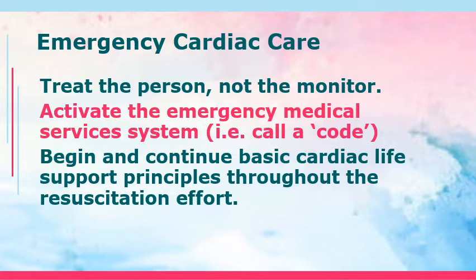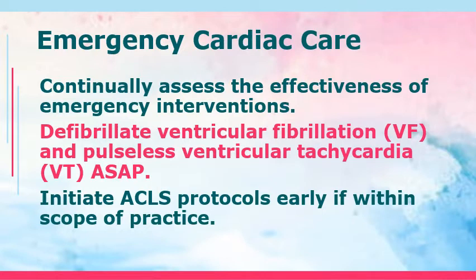Begin and continue basic cardiac life support principles throughout the resuscitation effort. Recall that chest compressions should be at least 2 inches in depth, and the ratio for adults is 30 compressions to 2 breaths. Continually assess the effectiveness of emergency interventions — every 2 minutes or every 5 cycles of CPR, check for the presence of a pulse. Whenever the defibrillator is available, defibrillate — especially for V-fib and pulseless V-tac, which should be defibrillated as soon as possible. Then initiate ACLS protocols early if within scope of practice.